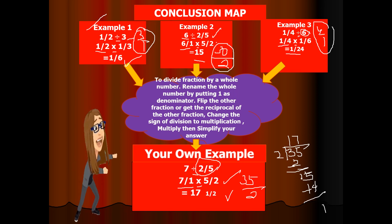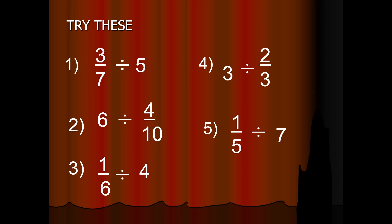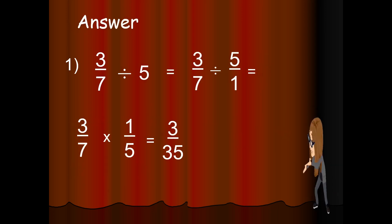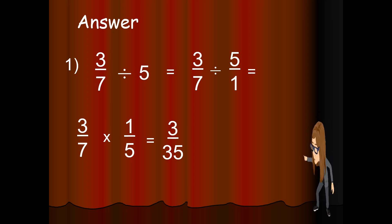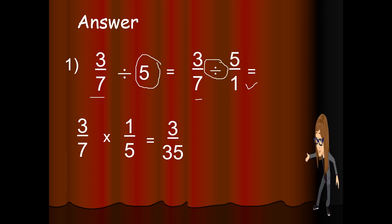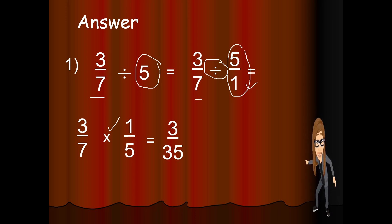Okay class, let's check your answers. We have 3 over 7 divided by 5. You keep 3 over 7, rename 5 as 5 over 1, change the sign of division to multiplication, flip or get the reciprocal of 5 over 1 to 1 over 5. Then multiply: 3 times 1 is 3, and 5 times 5 is 35. Very good.